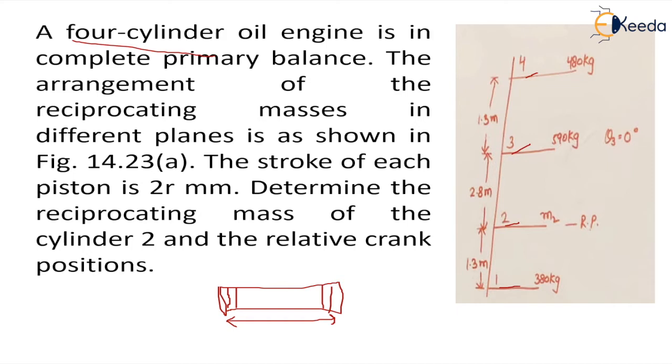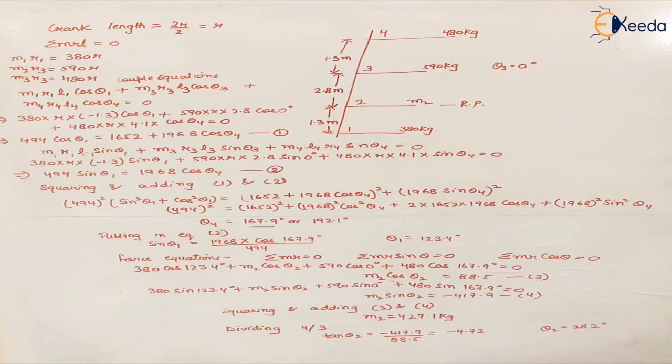We have to find the reciprocating mass of cylinder 2 and the relative angular positions of the cranks. Because the question asks for relative angular positions, we assume one angle to be 0, so theta 3 at plane 3 is 0. The piston stroke equals the diameter of crank, so the crank radius is r.